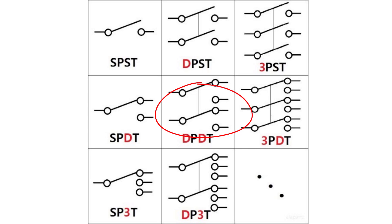Also, we have double pole, double throw, which have two inputs and two outputs.